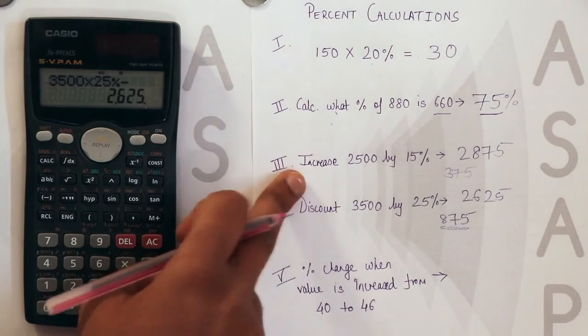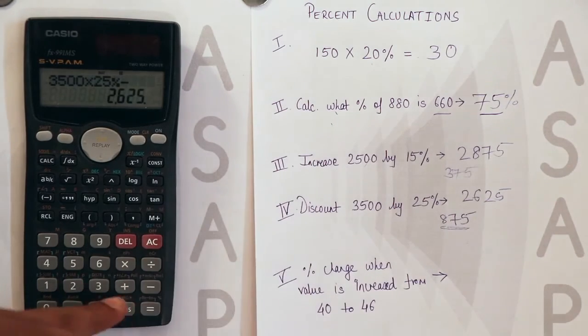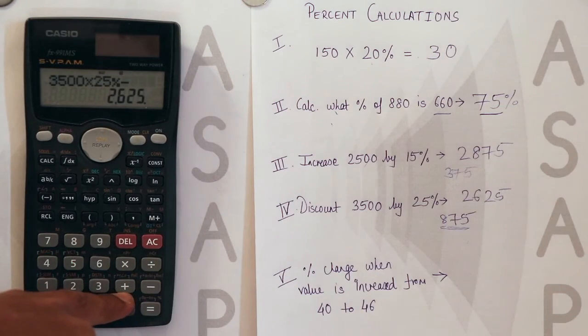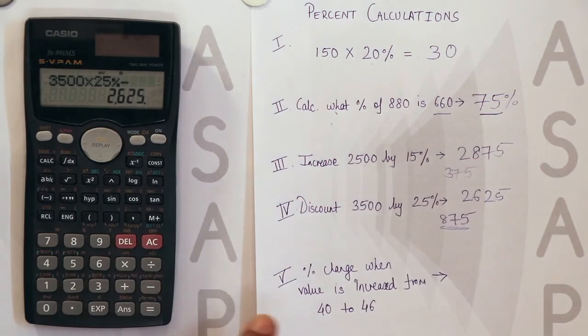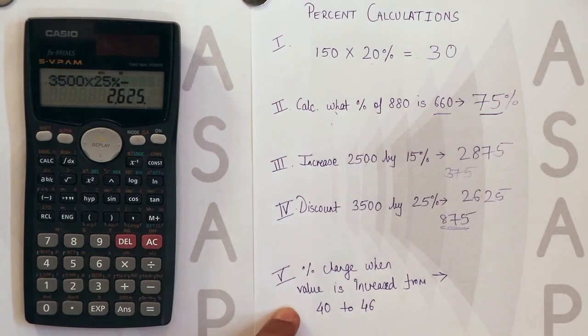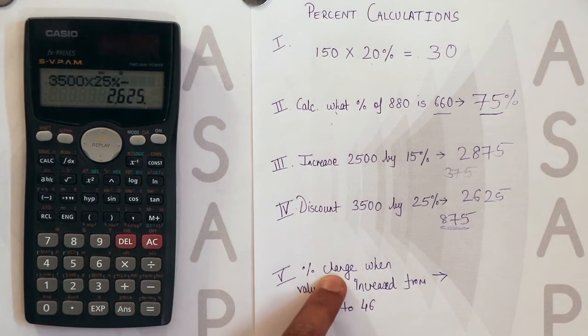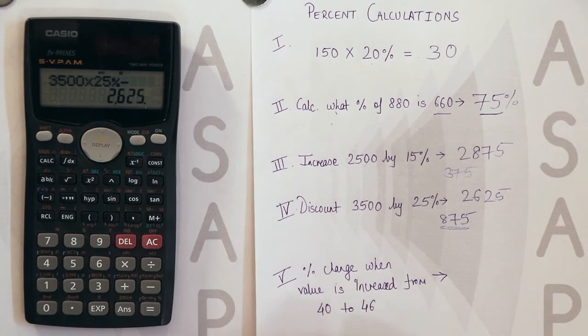The similar thing we saw in increase sums where we just added the plus sign in the end to get the final answer. Now another type of problem is percentage change in value when it is increased from a particular value to another.